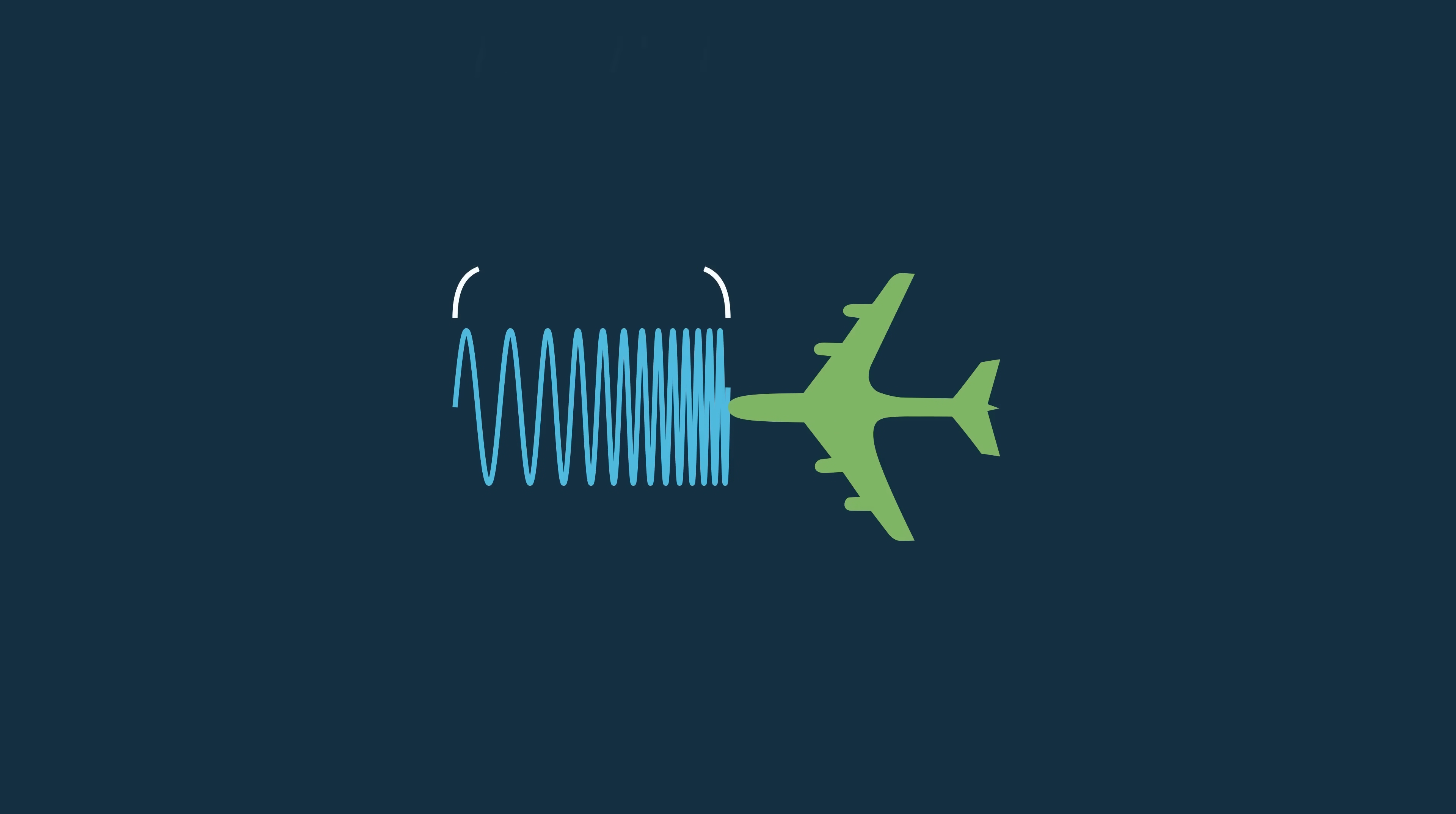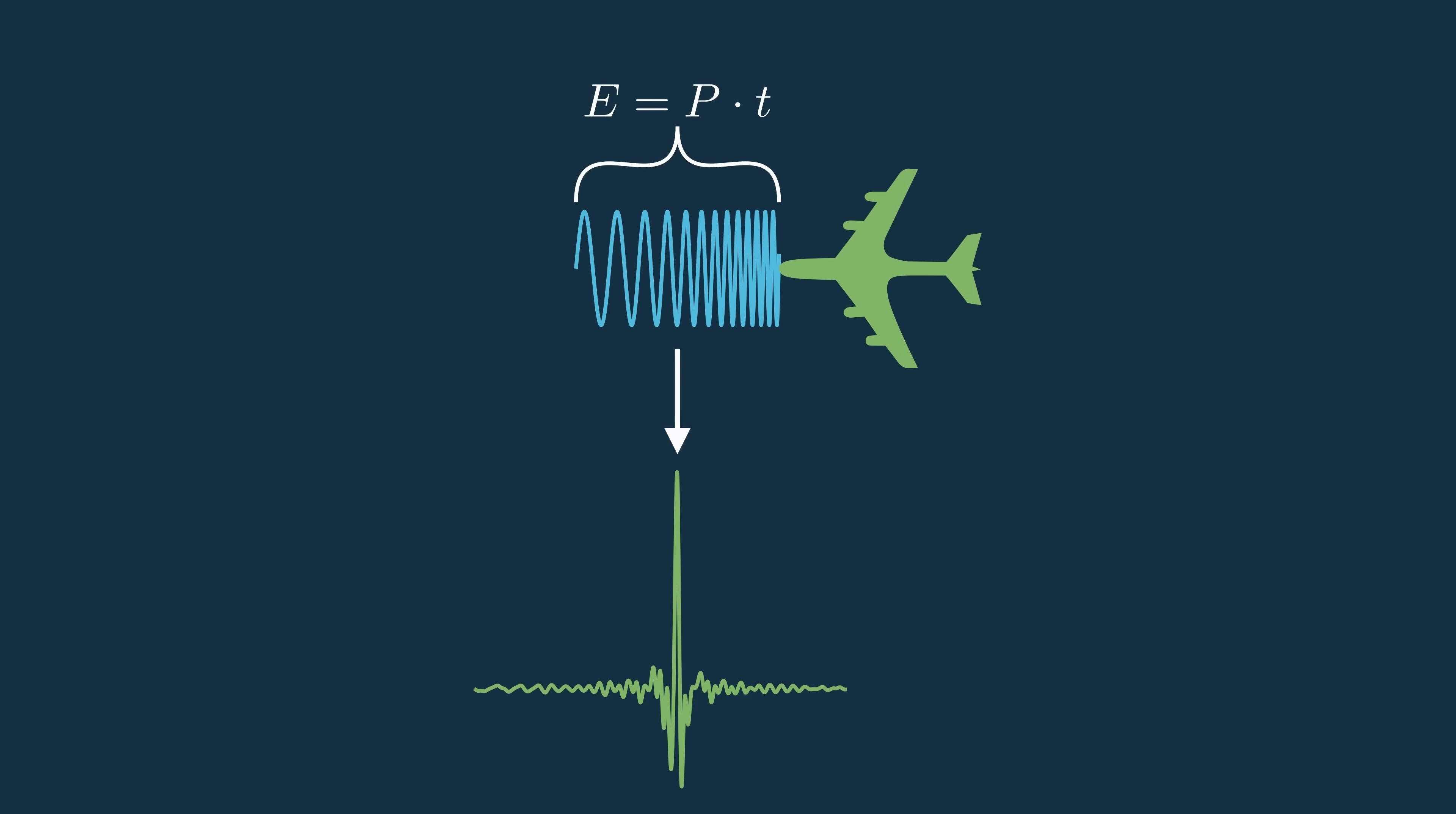Pulse compression is how we realize the benefit of illuminating the target with more energy, or power times time, to make the range resolution finer and increase our signal to noise ratio.